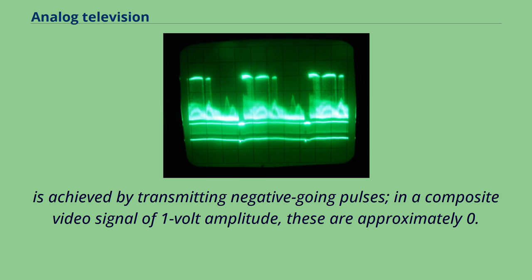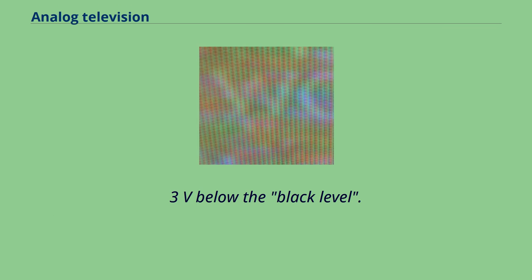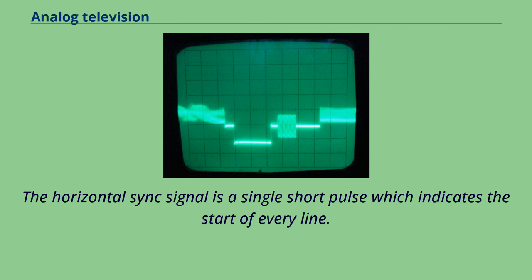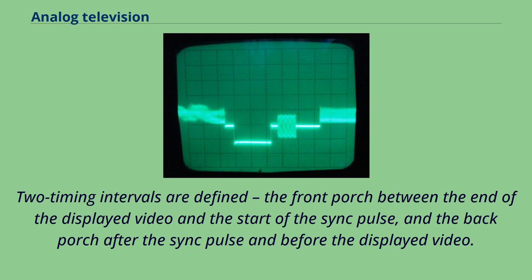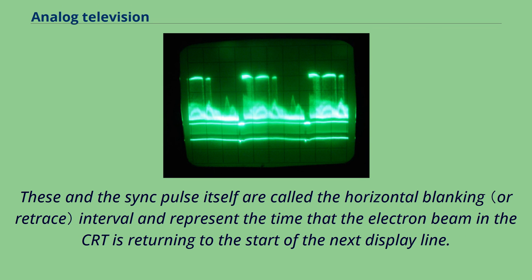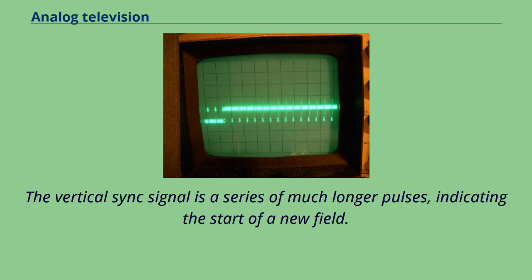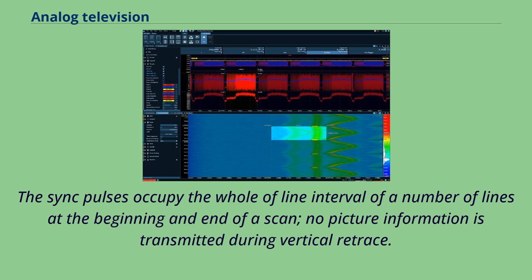The vertical sync signal is a series of much longer pulses, indicating the start of a new field. No picture information is transmitted during vertical retrace. In the television receiver, a sync separator circuit detects the sync voltage levels and sorts the pulses into horizontal and vertical sync. Loss of horizontal synchronization usually resulted in an unwatchable picture. Loss of vertical synchronization would produce an image rolling up or down the screen.